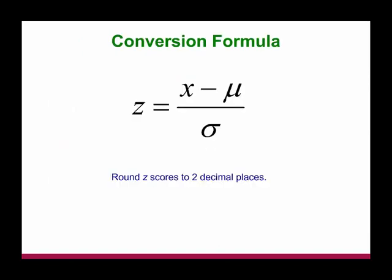So now we use the conversion formula: z-score equals x minus mu over sigma. Here, x represents a continuous random variable, mu represents population mean, and sigma represents population standard deviation.